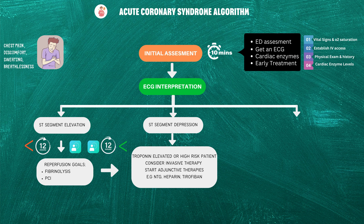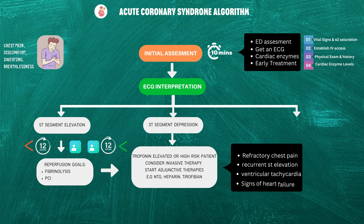In this phase, it's necessary to get troponin levels, which must be elevated to predict the MI. Invasive therapy is important if there is refractory ischemic chest discomfort, recurrent ST elevation, ventricular tachycardia, hemodynamic instability, or if there are signs of heart failure.